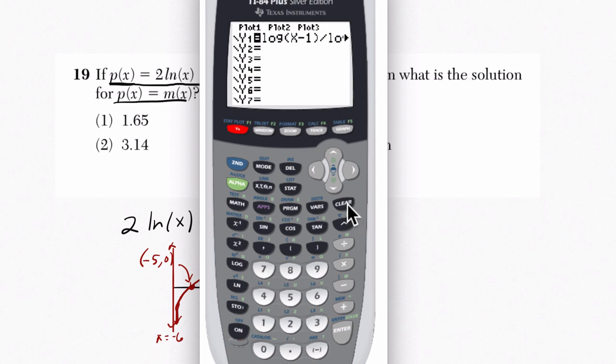So we go to y equals. Clear off any old problems we have on there. So we have to do twice the natural log of x. And we want to do the natural log, twice the natural log of x minus 1. That's the first one there. And the second one is the natural log of x plus 6. So we'll do that second. Natural log of x plus 6. So all I do is I press the y equals button to get here. And now I enter them and close my parentheses. And let's see if the graph produces anything.